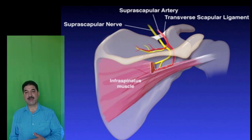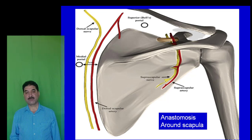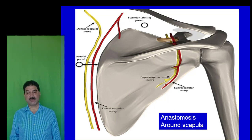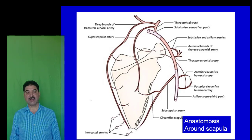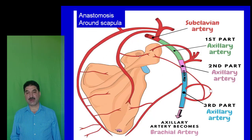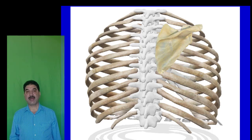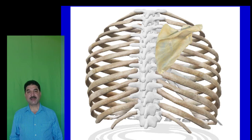The suprascapular nerve passes below the ligament and supplies supraspinatus and infraspinatus muscles. Another vessel related to the medial border of the scapula is the deep branch of the transverse cervical artery. These vessels, along with the subscapular artery, form an anastomosis around the scapula connecting the first part of the subclavian artery with the third part of the axillary artery. This anastomosis maintains blood flow to the upper limb if the axillary artery is ligated or kinked during surgery.